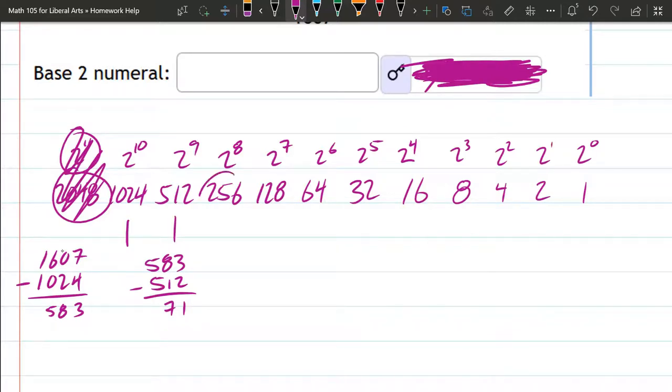All right, so how many 256s are in this number? None. That number is too small to have a 256 in there, so there's definitely none. How many 128s? None. The number is too small. So again, 0.